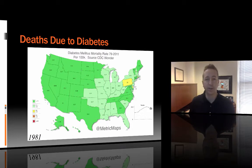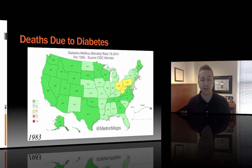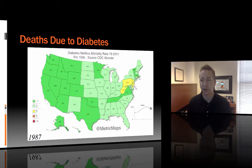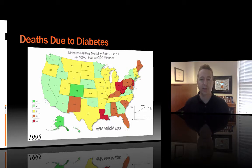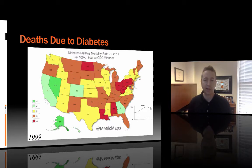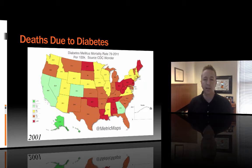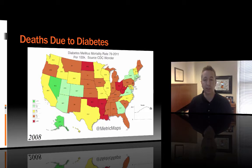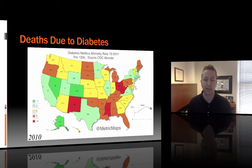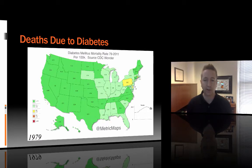This figure is similar but shows deaths due to diabetes over a much longer time window, from approximately 1979 through 2011. What you see again is increasing deaths due to diabetes, particularly in the American Southeast. This is a big concern that we need to get a handle on.